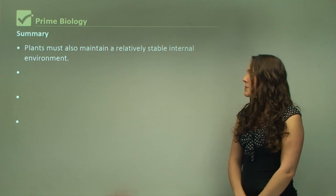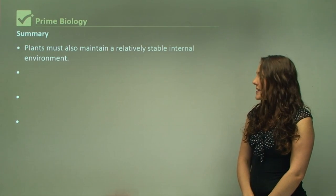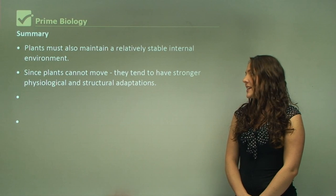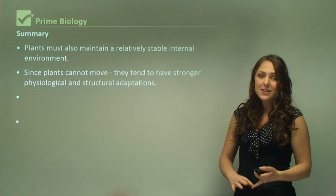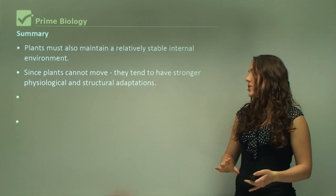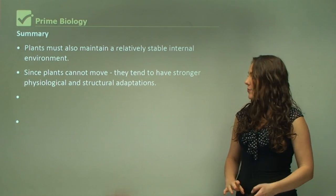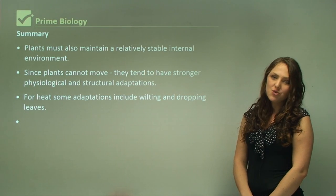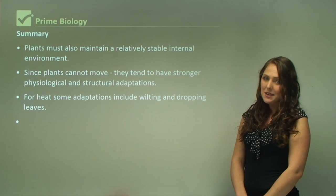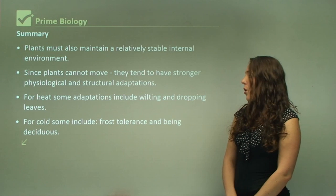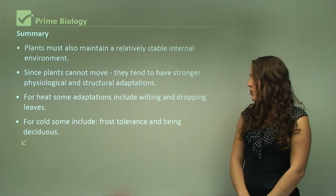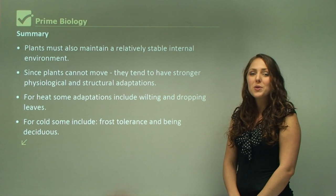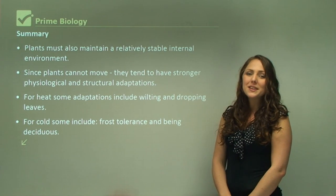In summary, plants must also maintain a relatively stable internal environment. Since plants cannot move, they tend to have stronger physiological and structural adaptations. For heat, some adaptations include wilting and dropping leaves in summer. For cold, some include frost tolerance and being deciduous. This concludes looking at homeostasis within plant species.